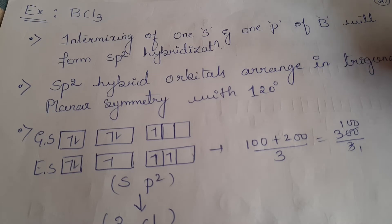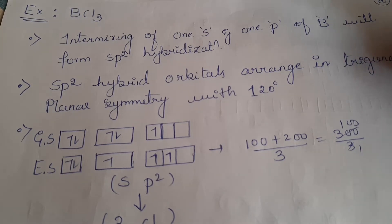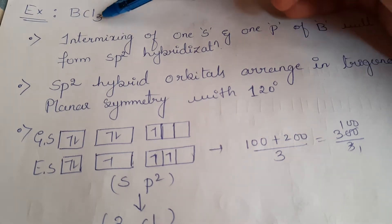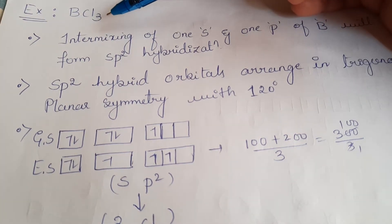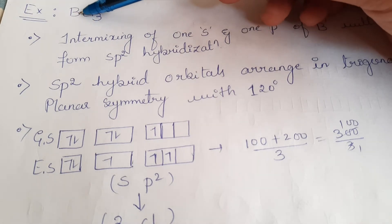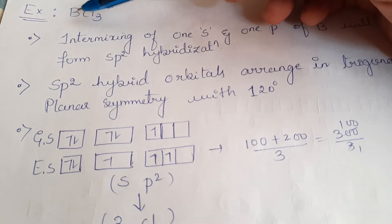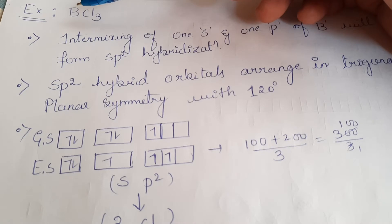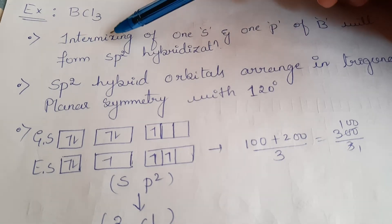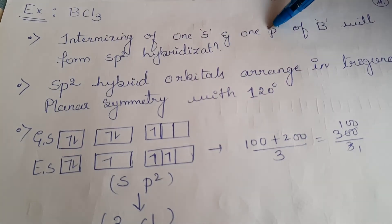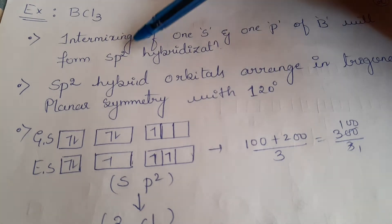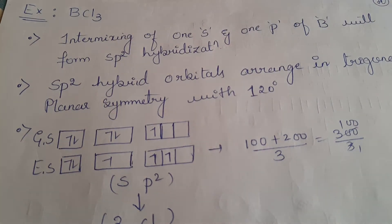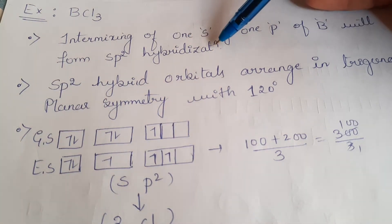Now let us discuss hybridization for BCl₃, boron trichloride. Boron has atomic number 5 and has three unpaired electrons. The two filled electrons are deeply associated with the nucleus and cannot be used for bonding. The intermixing of 1S orbital and 2P orbitals of boron forms SP² hybridization, giving us SP² hybrid orbitals.